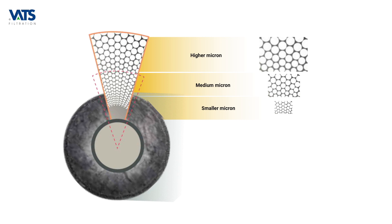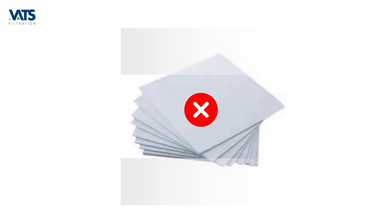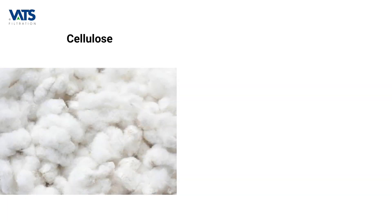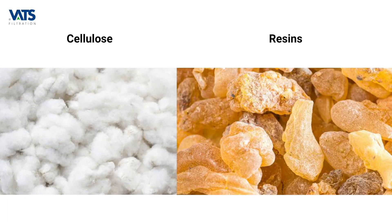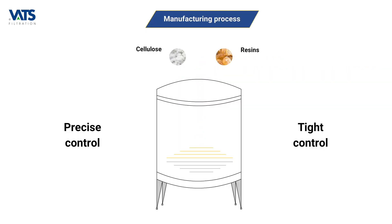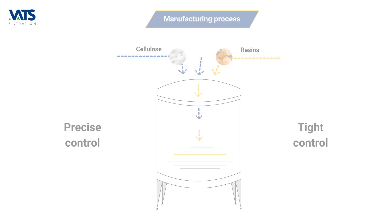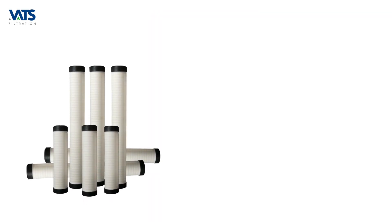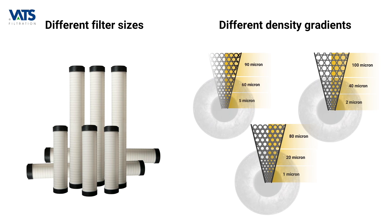How do we achieve this density gradient in a depth filter? Rather than using sheets of material, cellulose base materials are bonded with resins to form the filter element. Precise and tight control over the manufacturing process is the key to making filter cartridges of different sizes and density gradients.